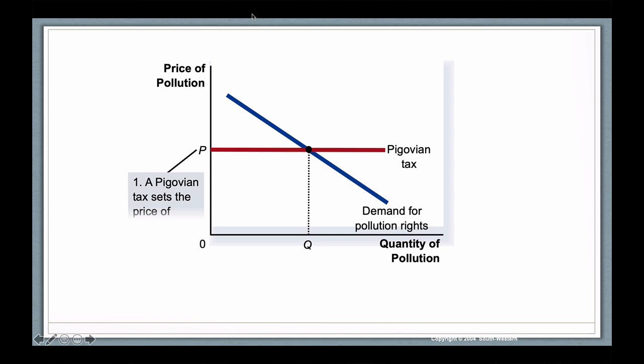And based on the demand curve, which is basically the degree to which companies are willing to pay to pollute given the other options they have and the cost of preventing pollution, that demand curve is going to determine what the total quantity of pollution is at that price.